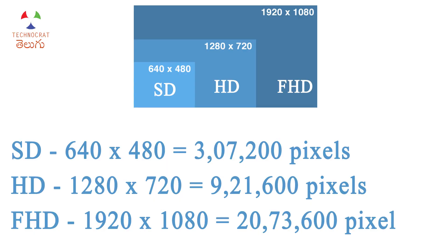We can compare resolutions from 5K down to 360 pixels. In Standard Definition, we have around 307,200 pixels total. In HD, we have 720 vertical pixels and 1,280 horizontal pixels, giving 921,600 total pixels. In Full HD, we have 1,080 vertical pixels and 1,920 horizontal pixels. 1080p is not just 360 pixels more than 720p — the total pixel count roughly doubles.